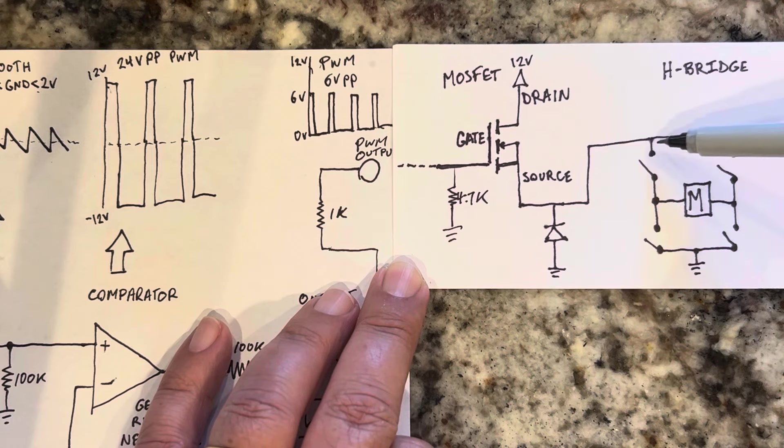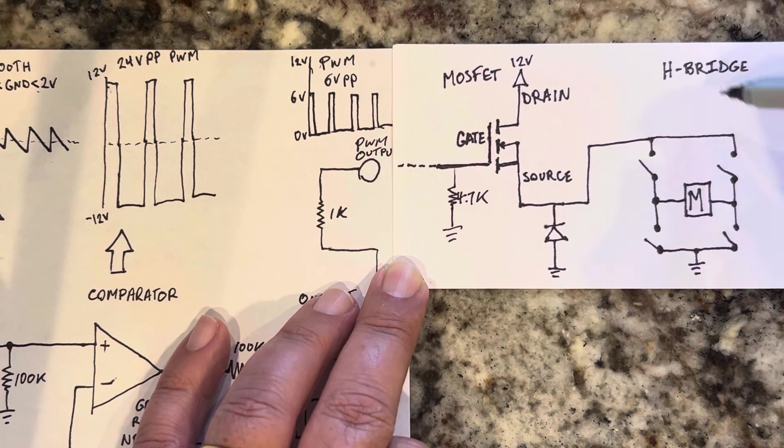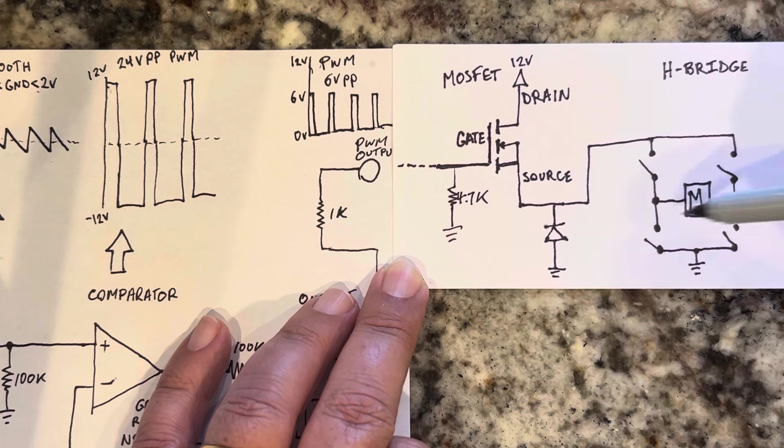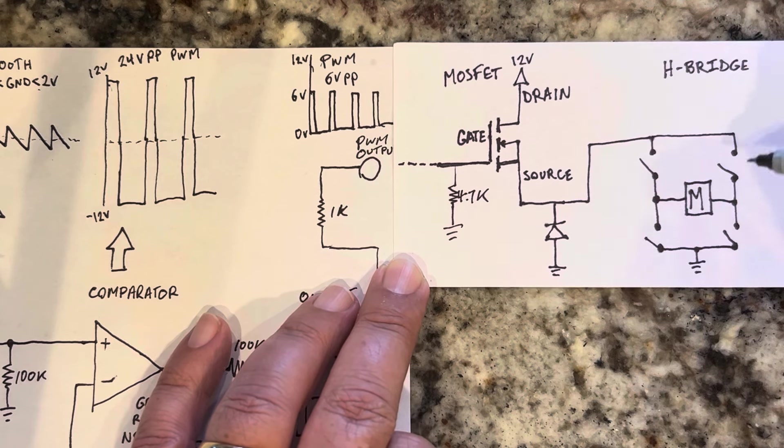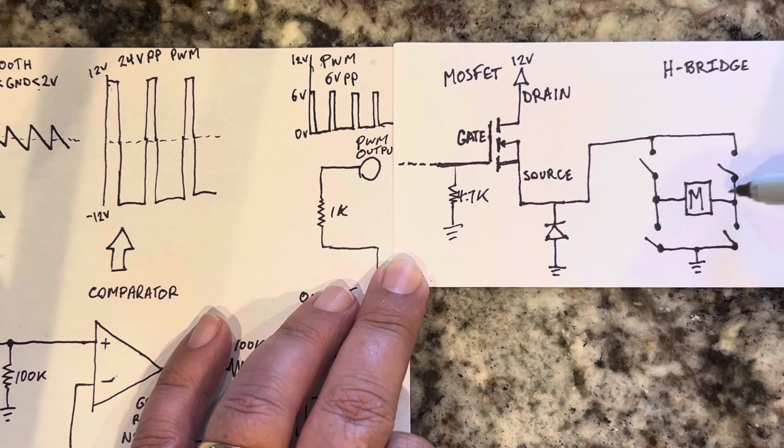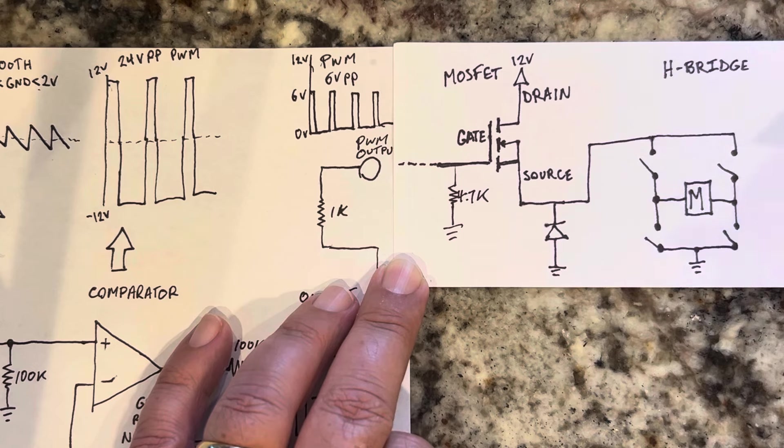Here's the H-bridge that I talked about two videos ago. This H-bridge functions to change the direction of the motor based on switches. If you close this switch and this switch at the same time, the motor spins in one way. If you close this switch and this switch at the same time, the motor closes in this way. You can't close this and this switch at the same time, because that's just a short circuit and you're going to blow up your MOSFET.